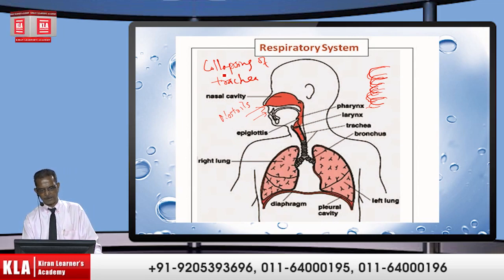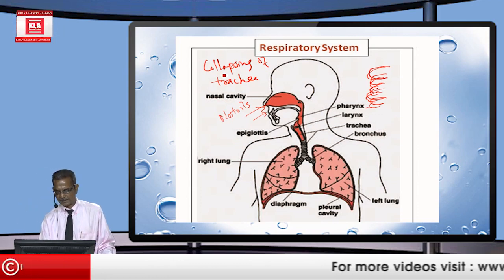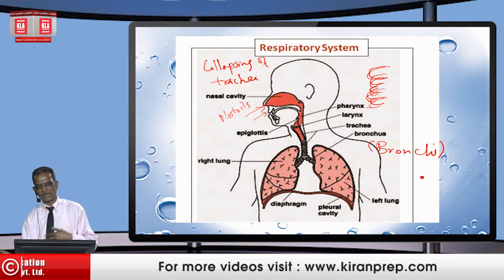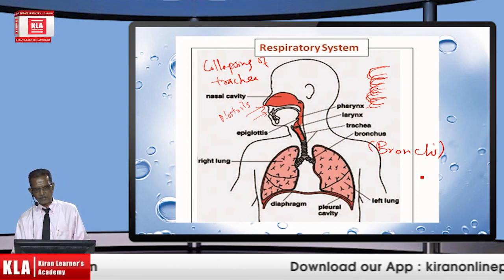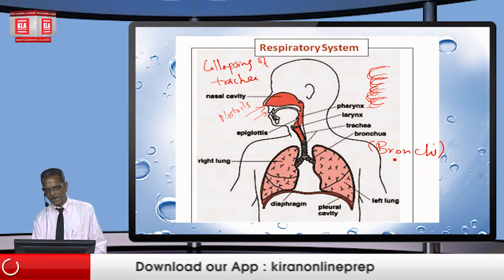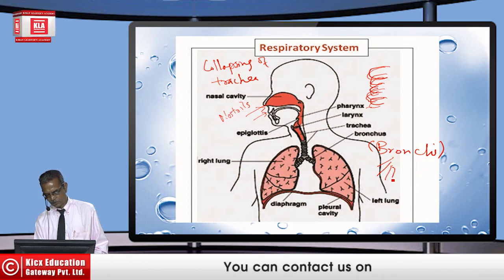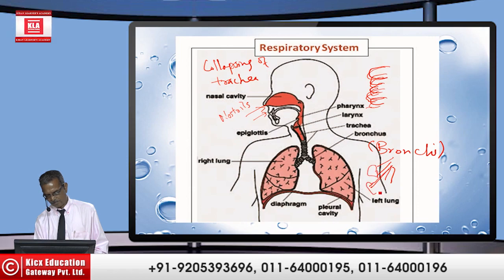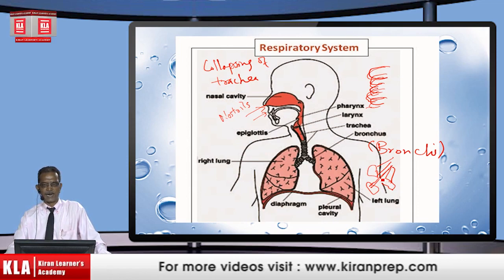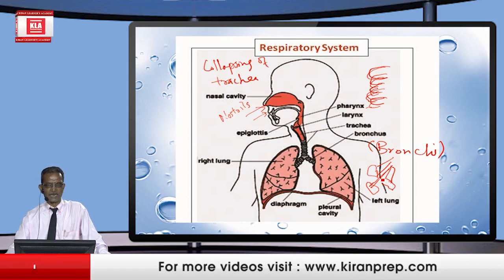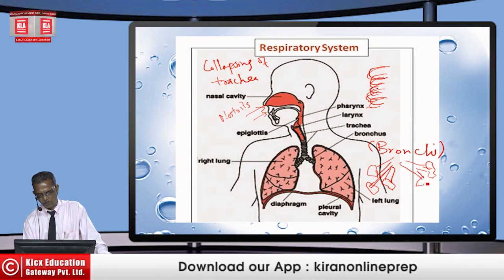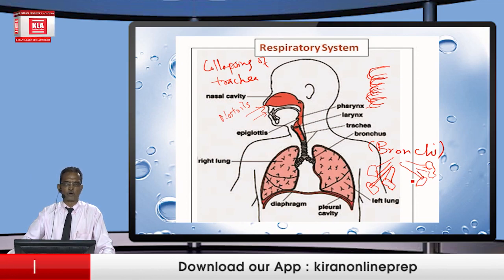The trachea then divides into bronchi — bronchus is singular, bronchi is plural. One bronchus passes to the right and the other to the left. On the right side, the bronchus further subdivides into three, because the right lung has three lobes. On the left side, because the heart occupies space in the chest cavity, the bronchus divides into only two, as there are only two lobes of the lung on the left-hand side of the thoracic cavity.